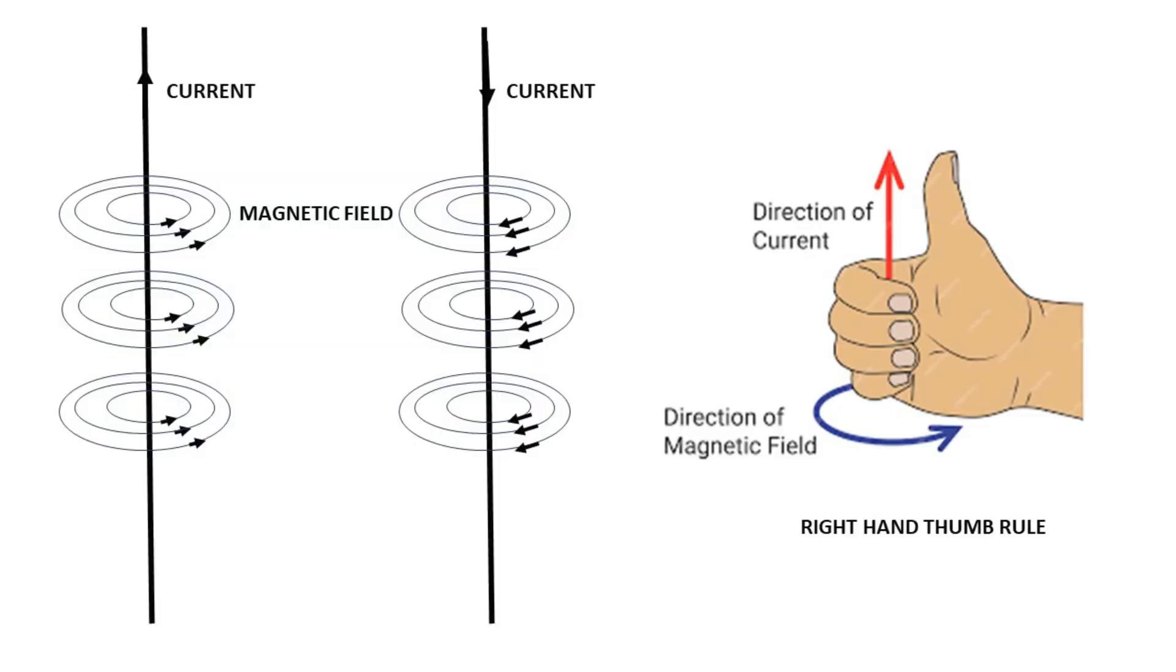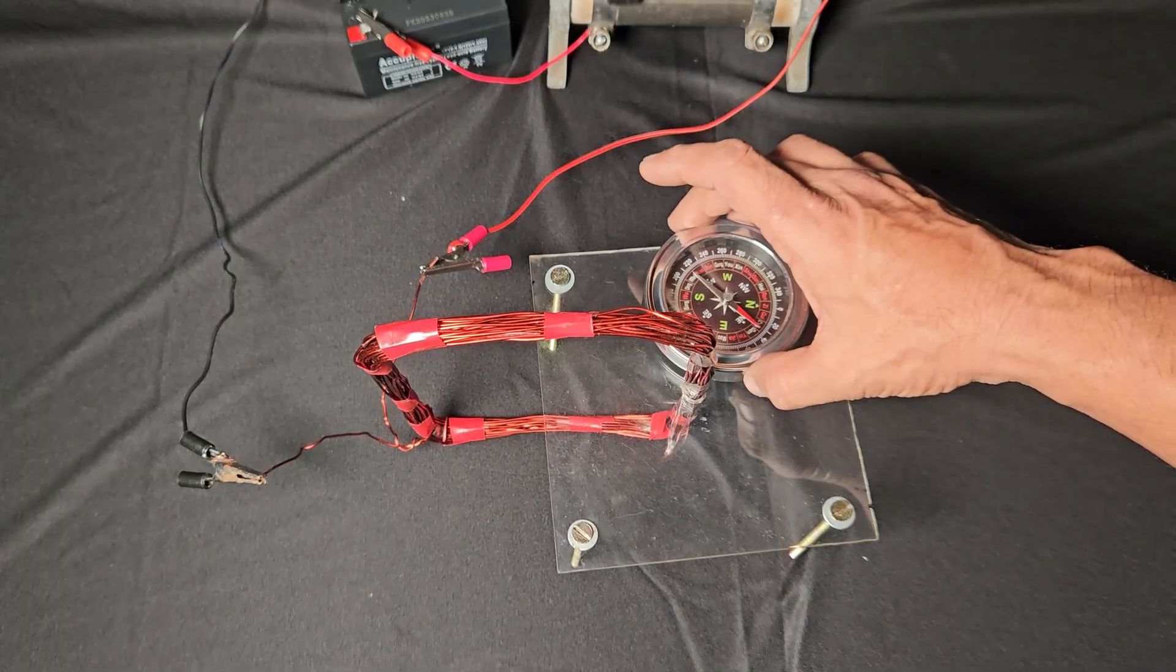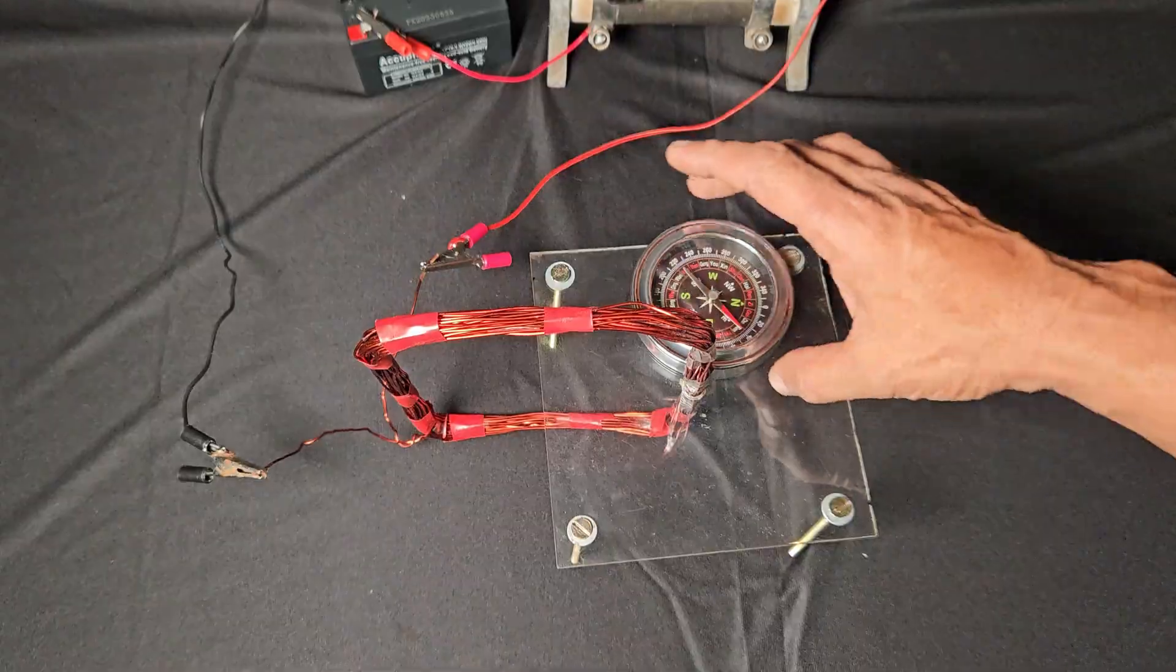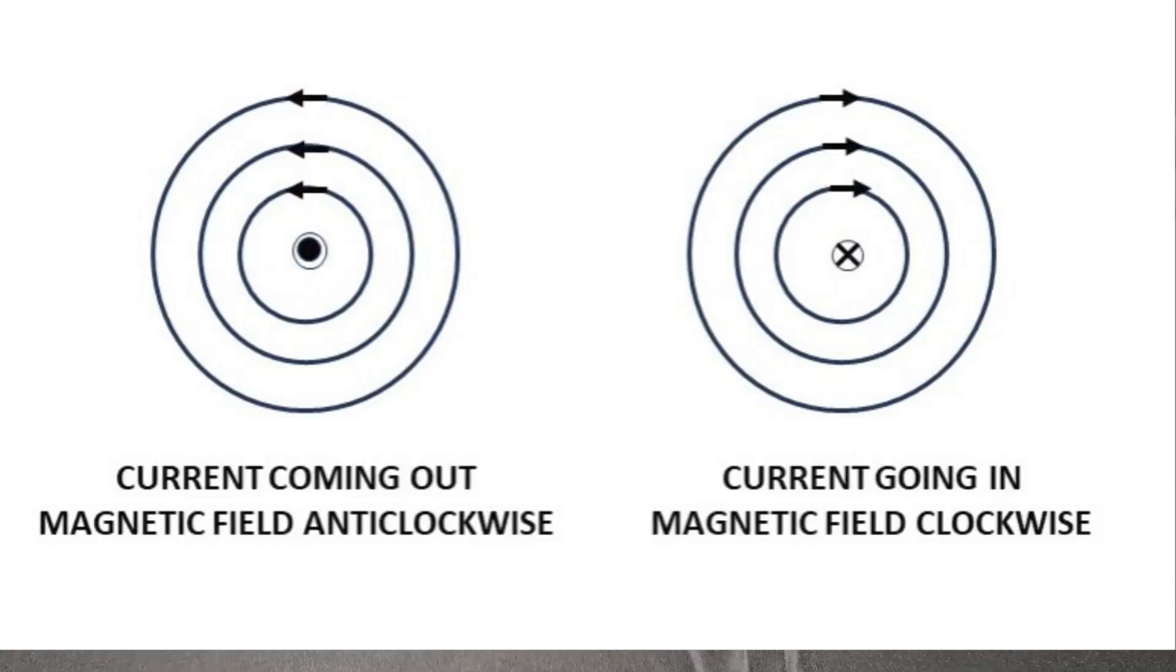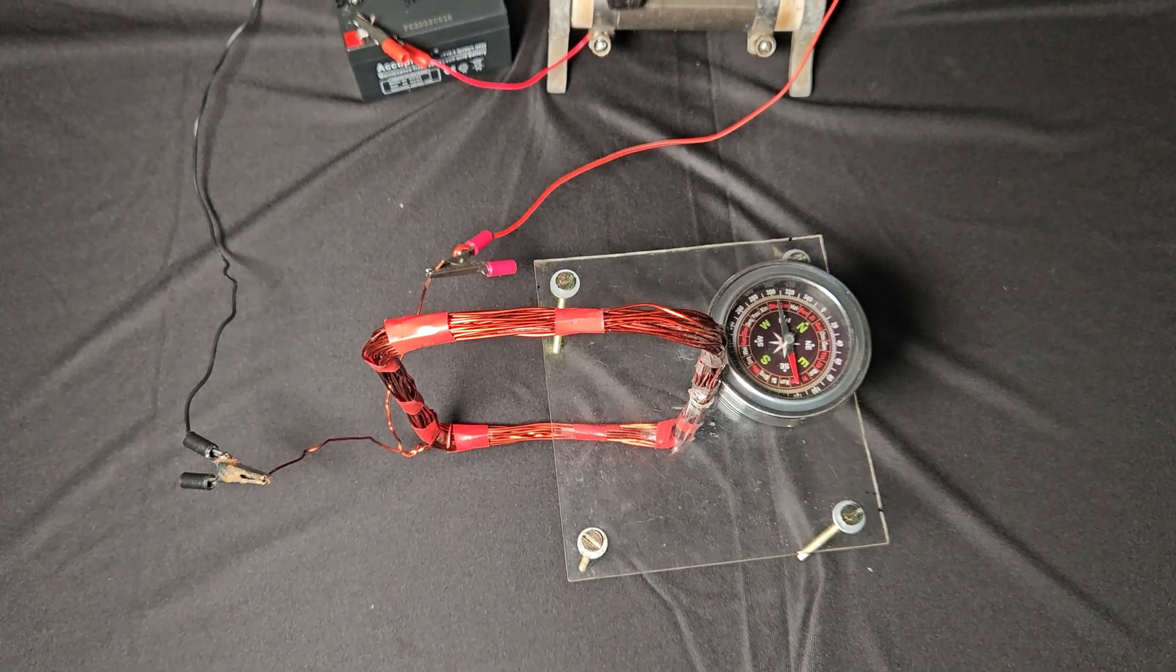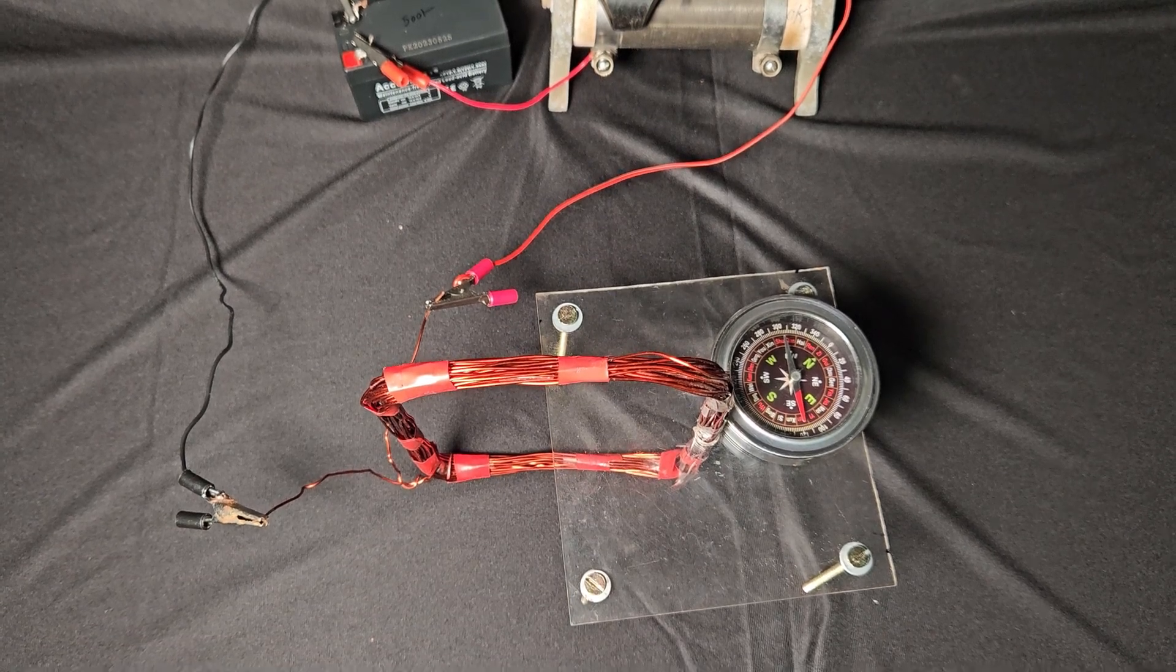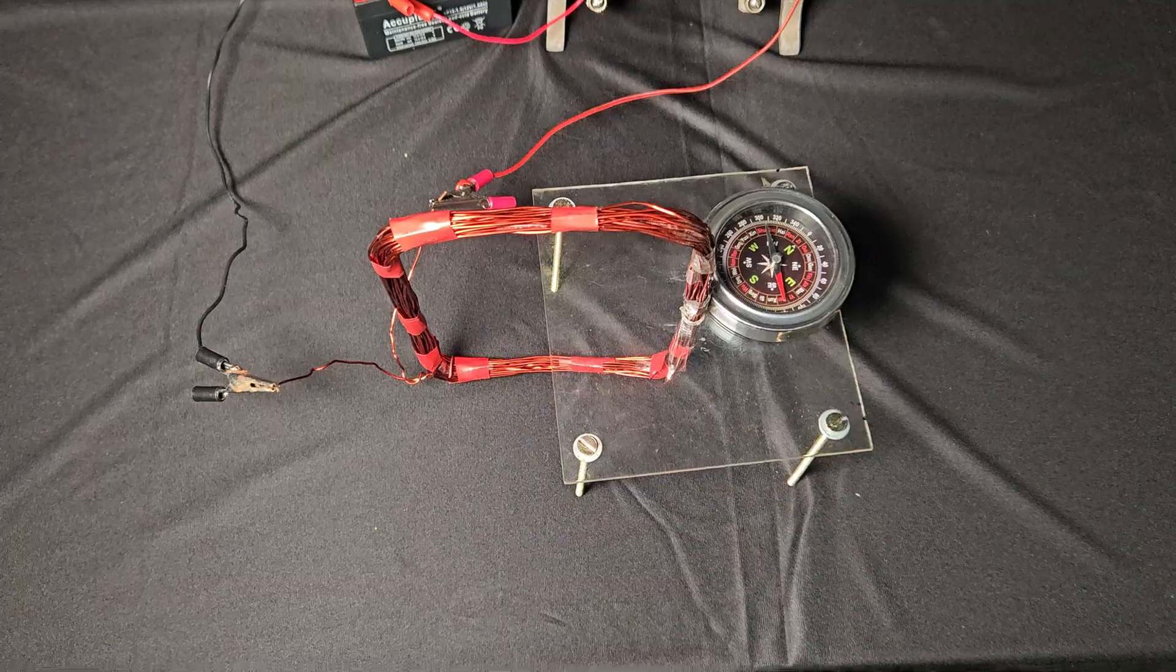That's exactly what Ampère did and came to a conclusion that the magnetic field produced by this conductor is circular in nature. As opposed to what Ørsted was thinking, Ørsted thought the magnetic field was parallel to the conductor. So basically, this experiment establishes the nature of the magnetic field produced by wire that is carrying current and that is circular in nature.